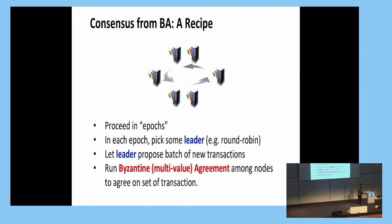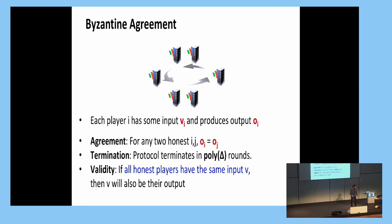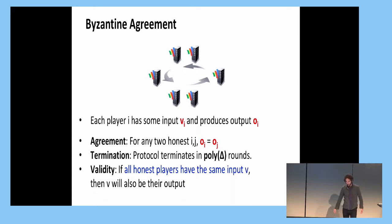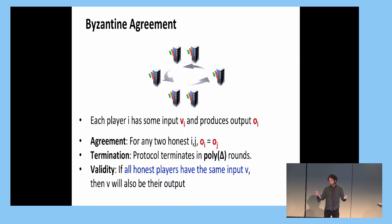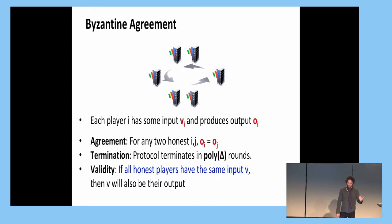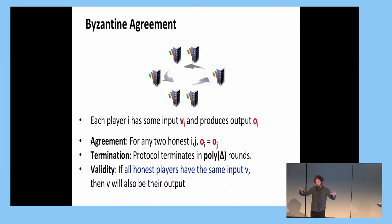Byzantine agreement is a single-shot game. We have a set of nodes, each with some input. They talk to each other and eventually generate some output. We require three properties: agreement — any two honest nodes get the same output; termination — it terminates within some fixed polynomial time in delta; and validity — if all honest nodes start with the same input, they should also get that as their output.